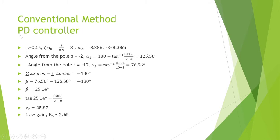Next, we design a PD controller to improve the transient response. The settling time is set as 0.5 seconds. The dominant poles are located at negative 8 plus minus 8.386i. There are two angles from the poles which are 125.58 and 76.56 degrees.